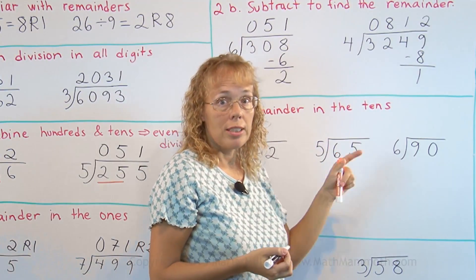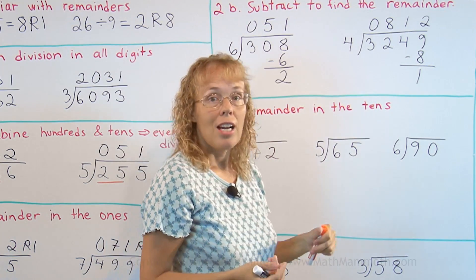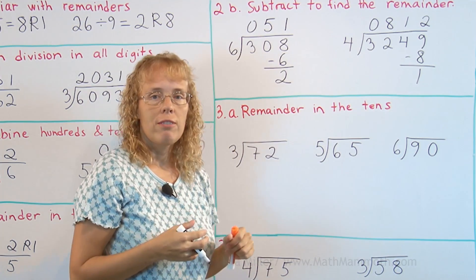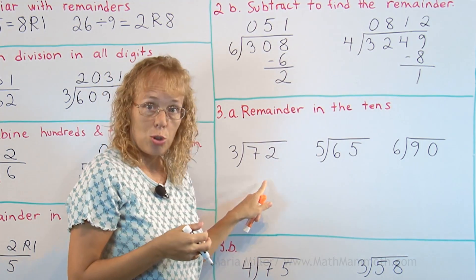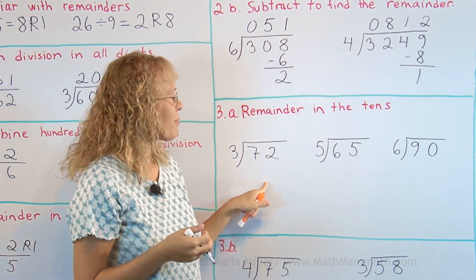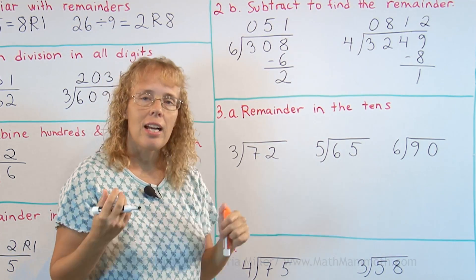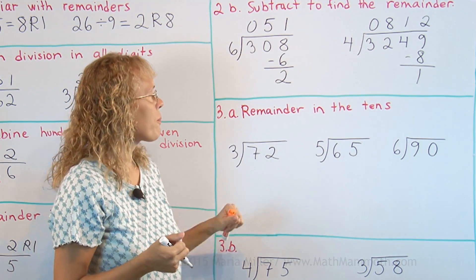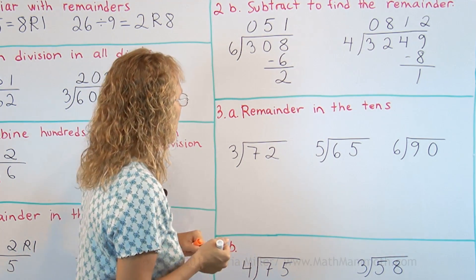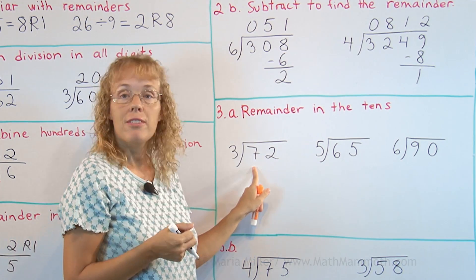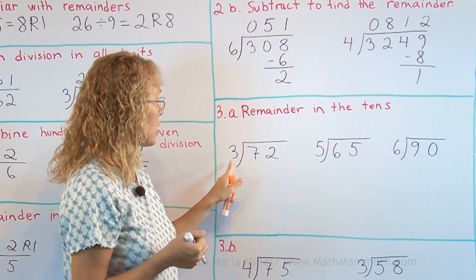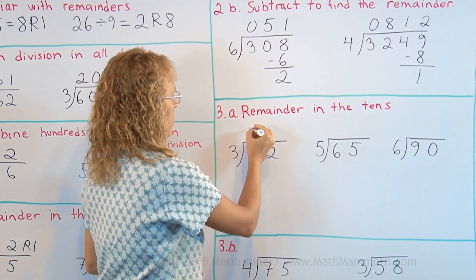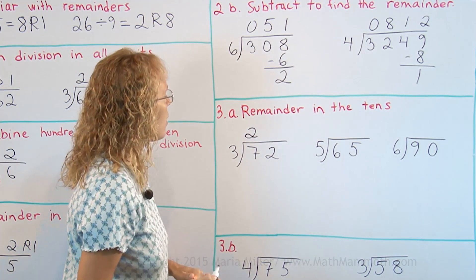After students have mastered all of this, we finally come to the actual long division algorithm, starting with 2-digit numbers first. Now they will see the algorithm in its fullness, where we will have a remainder in the tens as well. Here, 3 does not go evenly into 7, but it does go into 7, so we are not going to put 0 there — 3 goes into 7 two times.